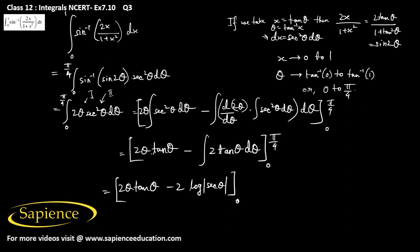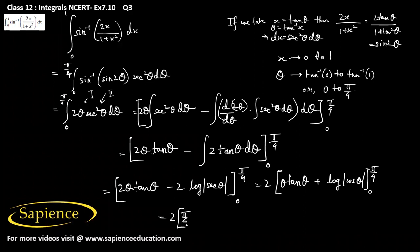We can rewrite this as 2(θ · tan θ + log|cos θ|) from 0 to π/4, since 1/sec θ = cos θ, so minus log|sec θ| becomes plus log|cos θ|. Substituting the limits: 2[(π/4 · tan(π/4) + log|cos(π/4)|) minus (0 · tan 0 + log|cos 0|)].